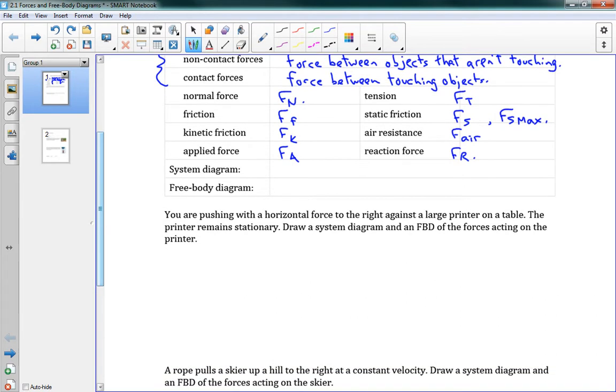So those are all our different forces. The last thing we need to talk about here is different types of diagrams. So we have two types of diagrams that we draw when we deal with forces. A system diagram is just a drawing of a problem, and generally, this is a sort of realistic drawing. Whereas a free body diagram is a simple line drawing that just shows the forces.